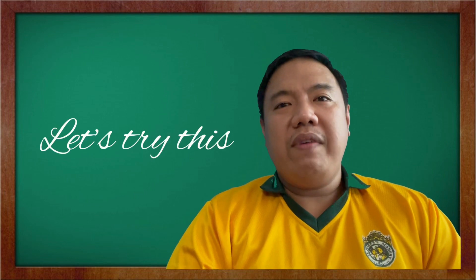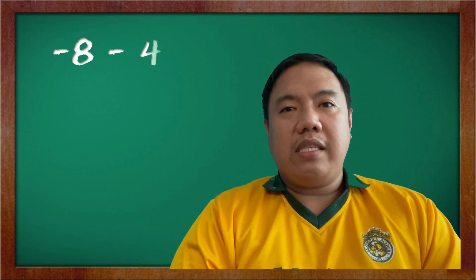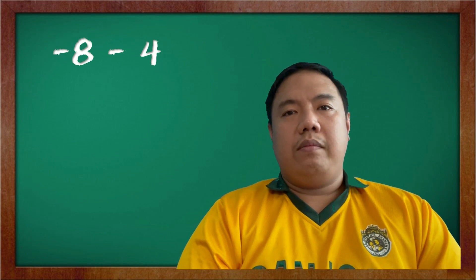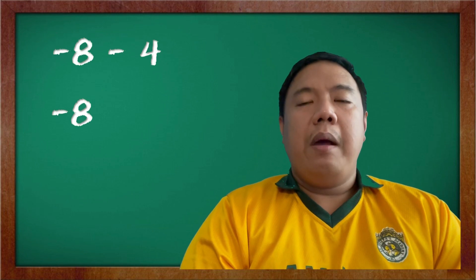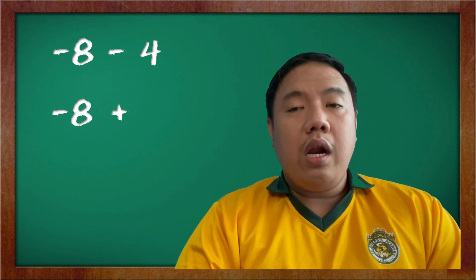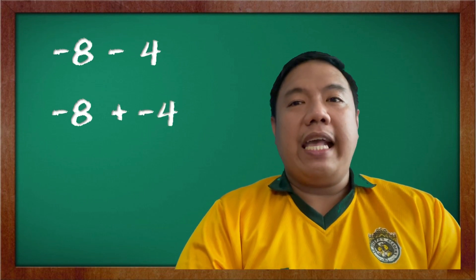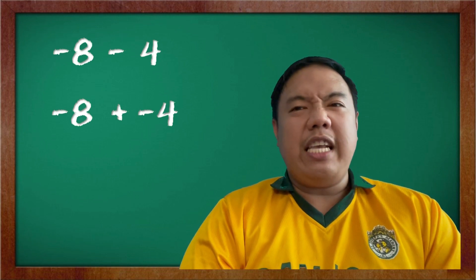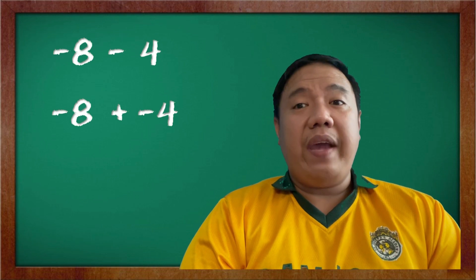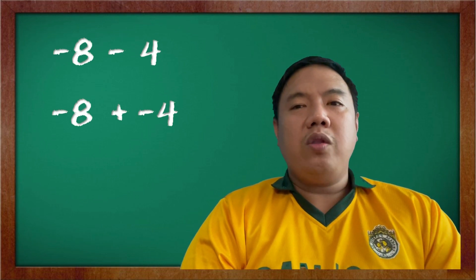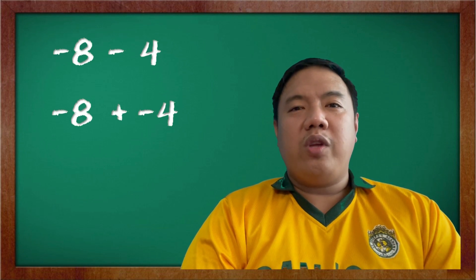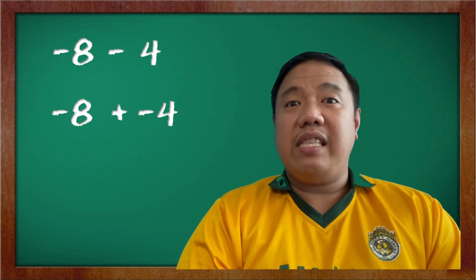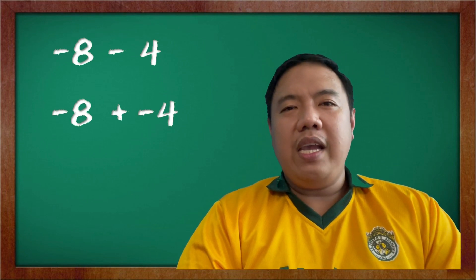Let's test our given for subtraction. Let's say you are given negative 8 minus 4. You need to bring down negative 8 — copy it. Minus will be plus. And then 4, we need to get its opposite, which is negative 4. Going back to our addition of integers, we now have negative 8 plus negative 4. Adding same signs, we add the numbers and copy the common sign. So 8 plus 4 is 12, and since negative is the common sign, our final answer is negative 12.